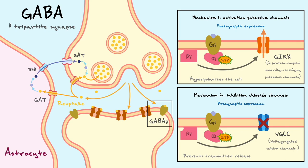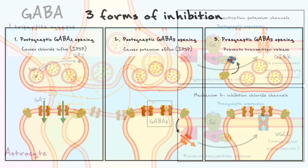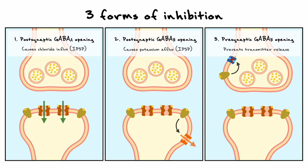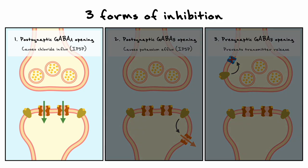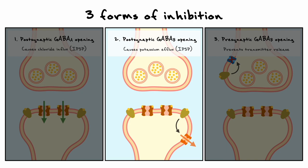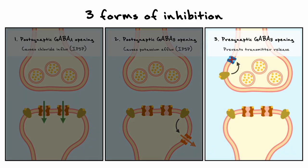Based on what we've discussed about ionotropic and metabotropic channels, there are three general ways to inhibit the postsynaptic cell. The first is through the GABA-A receptor, which hyperpolarizes the cell by letting chloride ions enter — this includes shunting inhibition. The second is through activation of postsynaptic GIRK channels by GABA-B. The third is by preventing or diminishing presynaptic release by blocking presynaptic calcium channels, again via GABA-B activation.